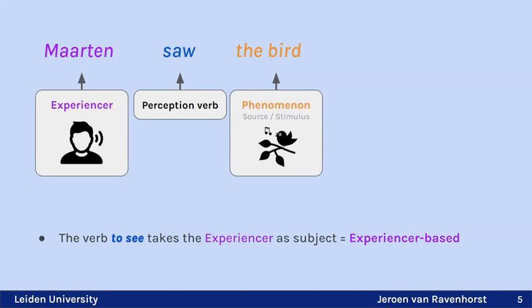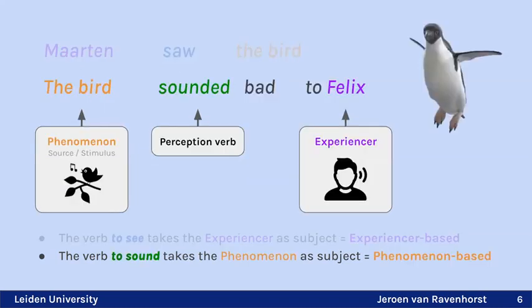In 'Martin sees the bird,' Martin is the experiencer as subject and the bird is the phenomenon — the object perceived. That's what we call an experiencer-based verb. We also have phenomenon-based verbs, where the phenomenon is the grammatical subject — for example, 'the bird sounded bad to Felix,' where Felix is the experiencer expressed as an oblique.